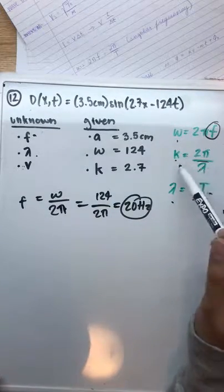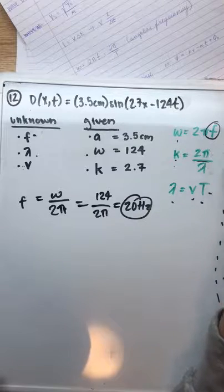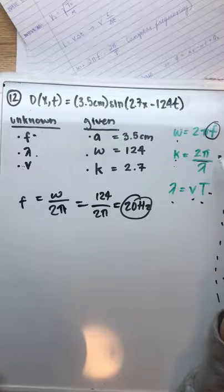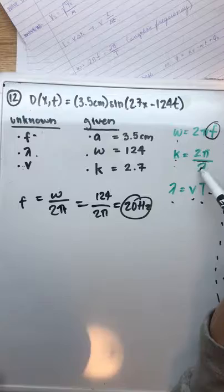To find a wavelength, we can look at the equation of k, which is 2 pi over wavelength, and just rearrange that so that we can find wavelength.